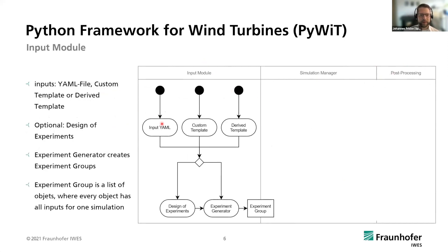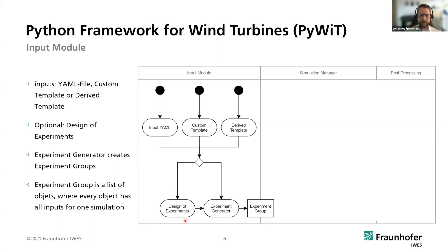In the input module, you can use YAML files, which are similar to JSON files but have some advantages. You can also use custom templates, derive templates from other simulations, or use a script to create those templates. As an optional step, you can use the design of experiments, which is very useful when setting up hundreds or thousands of simulations to combine all input parameters. The experiment generator then creates experiment groups from all these simulations.